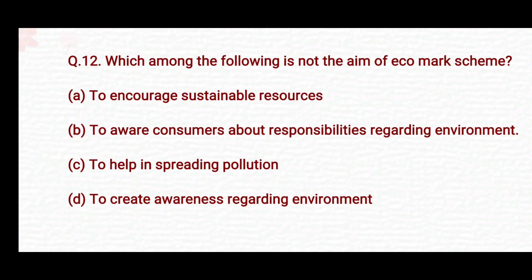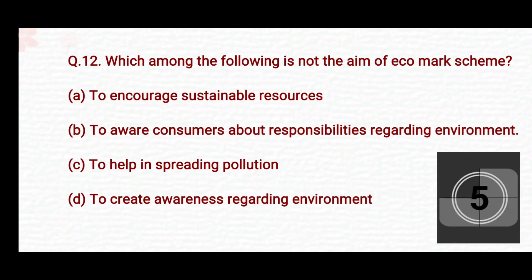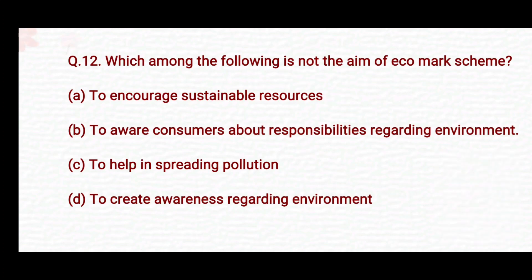Which among the following is not the aim of the eco mark scheme? Option A: to encourage sustainable resources. Option B: to make consumers aware about responsibilities regarding environment. Option C: to help in spreading pollution. Option D: to create awareness regarding environment. The right answer is Option C — to help in spreading pollution — is not the aim of the eco mark scheme.